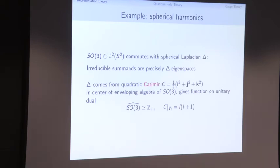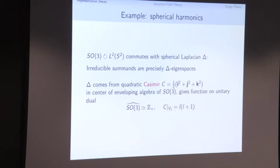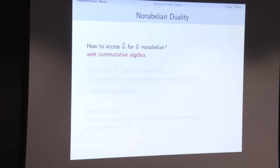That means whenever I have a representation of SO(3), I can diagonalize the Casimir operator, and this gives the spectral decomposition. The dual of SO(3) — the set of irreducible representations — is the set of positive integers, and the Casimir acts by the scalar L(L+1) on each irreducible representation. In other words, the Casimir gives a function on G-hat: for each irreducible representation, we get a number.